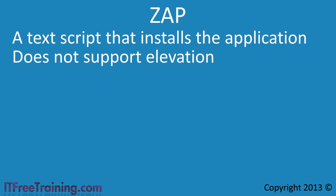First, a zap file does not support elevation. Elevation is the process of using a different set of credentials to install the software. The Windows installer can use the system account to install the software, meaning the user who logs into the computer does not require administrator access. In order to use zap files, the user who logs in requires enough access to install the software, which in most cases will mean administrator access.